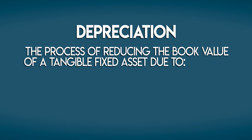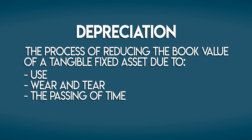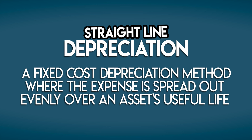Depreciation is the process of reducing the book value of a tangible fixed asset due to use, wear and tear, the passing of time, or obsolescence. Straight line depreciation is a fixed cost depreciation method where the expense is spread out evenly over an asset's useful life.